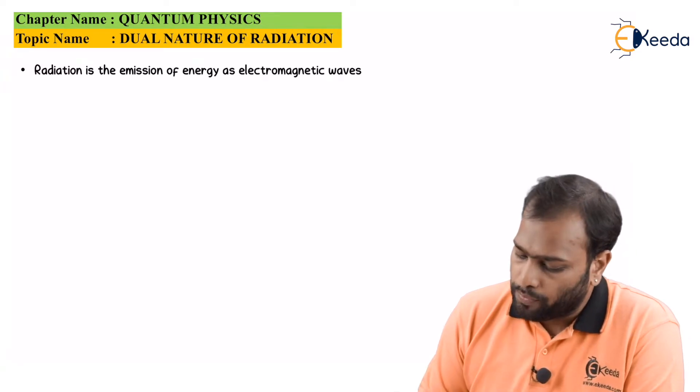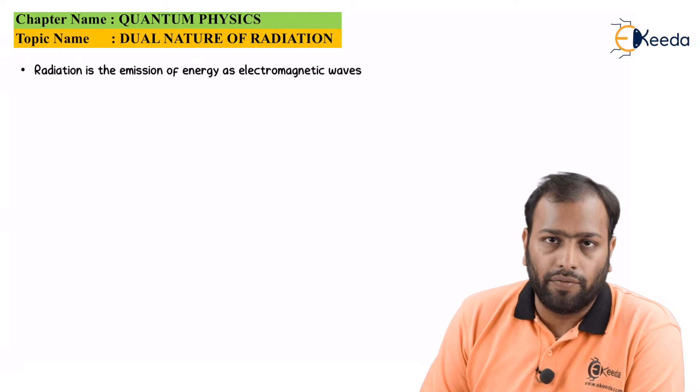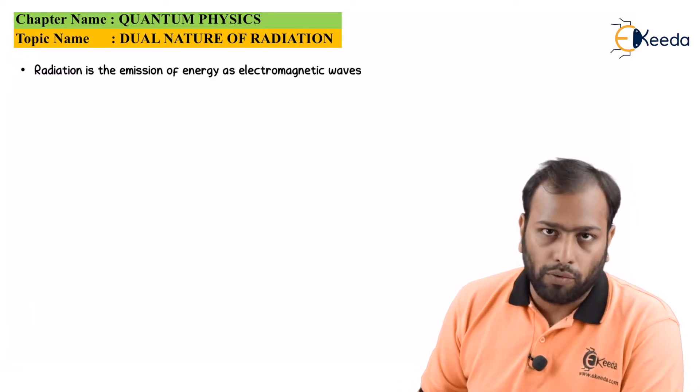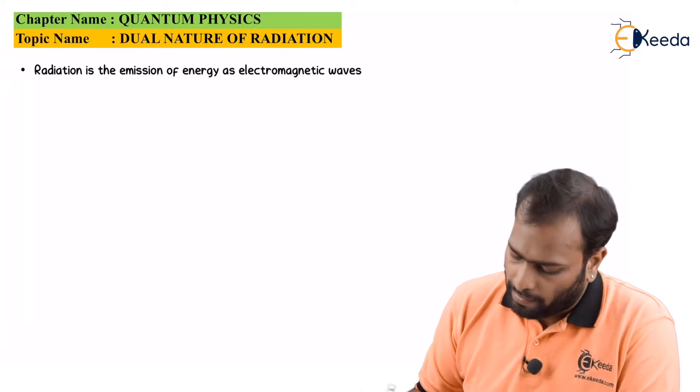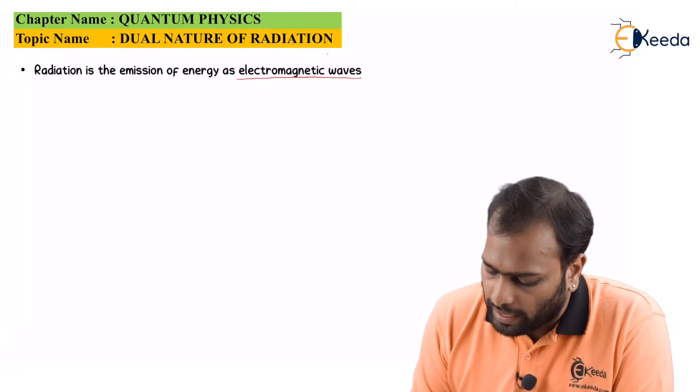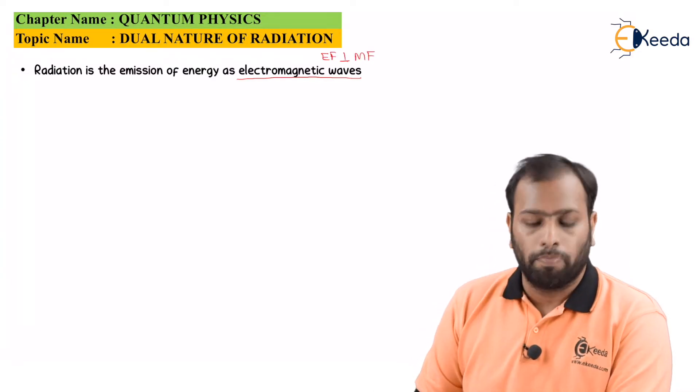If you don't know, let me explain you. Well, electromagnetic wave is a wave in which electric field and magnetic fields are perpendicular to each other. Well, this could be an important question for you in viva. So be prepared for it. So electromagnetic wave is a wave in which the electric field is parallel to the magnetic field.